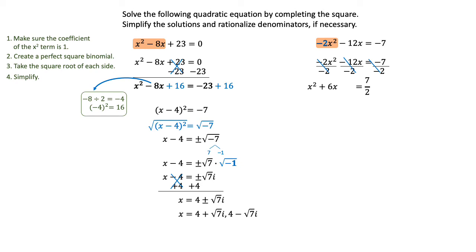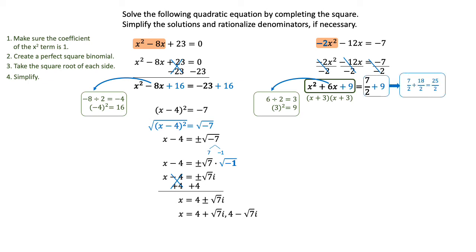Then I'm going to complete the square just like we did in the other example. Take 6 — half of 6 is 3, 3 squared is 9 — and add 9 to both sides. We're adding a perfect square to both sides, and it's going to let us write the left-hand side as x plus 3 times x plus 3. Adding 7 halves plus 9 on the right-hand side gives 25 over 2. So we can write the perfect square binomial x plus 3 squared equals 25 over 2. Notice that half of 6 is 3, and that is the number we used again — that's the number you're going to be using moving forward.